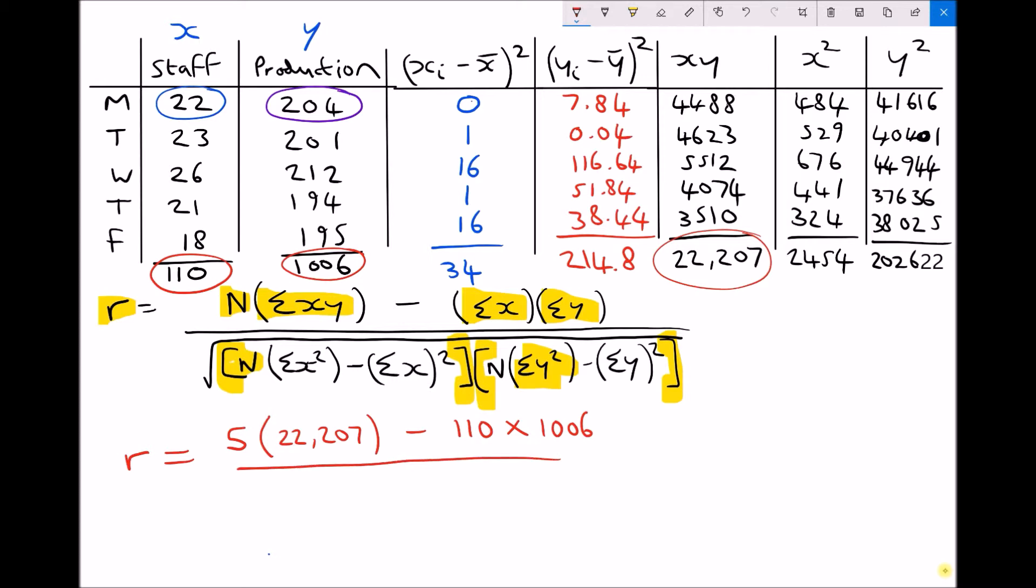On the bottom of our fraction we have the square root of 5 times the sum of x squared. Well the sum of x squared was all of our x squared values added up. So the second column from the right hand side, 2454. Minus the sum of x squared. Well the sum of x we've already used is this value here, the 110. That's all of the x pieces of data added together. So we've got 110 squared.